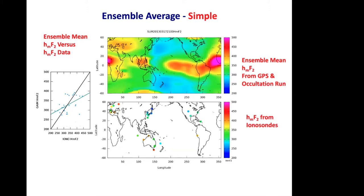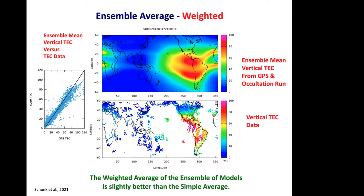For HMF2, with just GPS TEC and topside density data, all models had difficulty capturing HMF2 because a given NMF2 value could occur at different heights. Therefore, a simple average of the six models did not produce an improved result for HMF2. A weighted average was also considered, and for this specific case it was slightly better than the simple average. However, a lot of additional work needs to be done before general conclusions can be drawn about how useful this technique is.